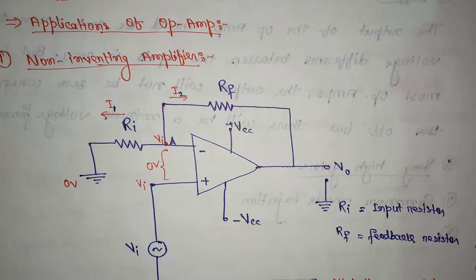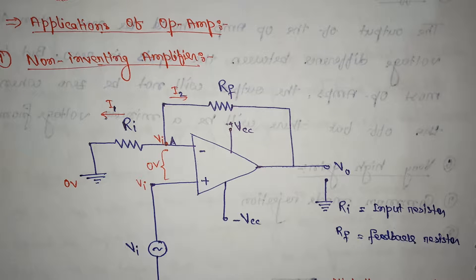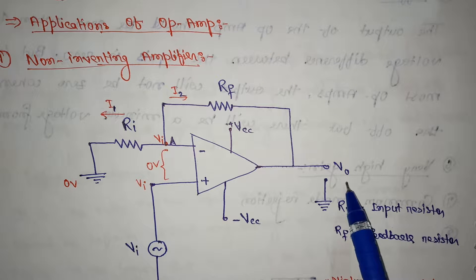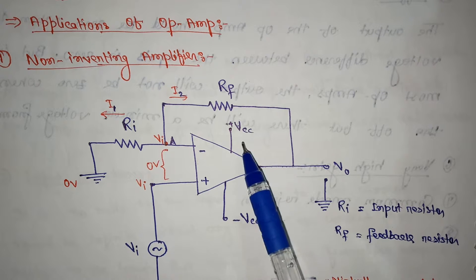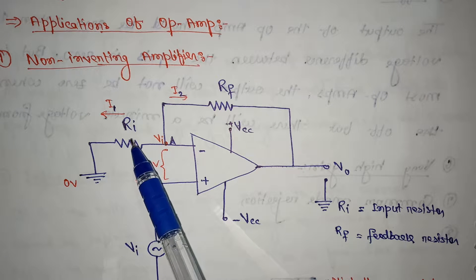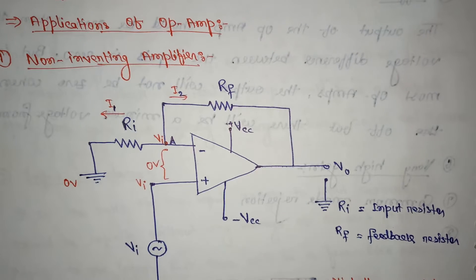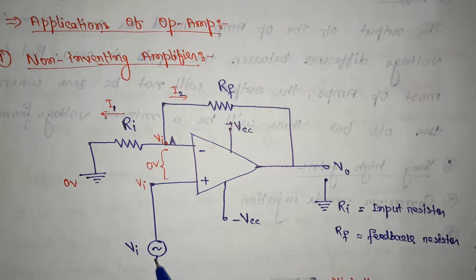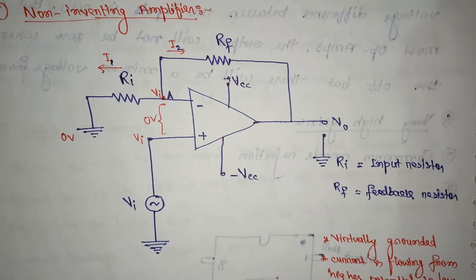We have given this circuit diagram for the non-inverting amplifier, where the input voltage is VI, the output voltage is V0, and we have the positive and negative voltage supplies. We also have the input resistor RI and the feedback resistor RF.